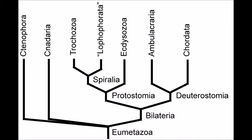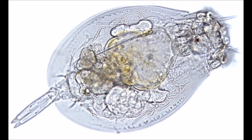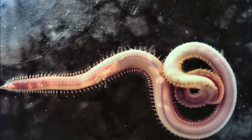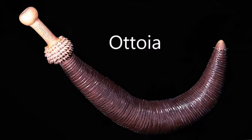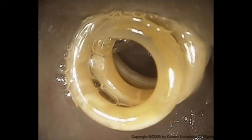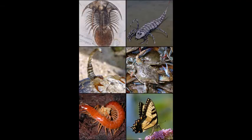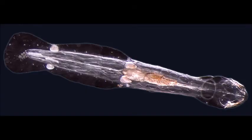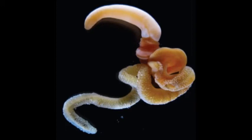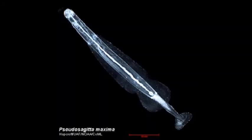Protostomia encompasses a huge group of bilaterally symmetrical animals and is mostly comprised of two clades called Lophotrochozoa and Ecdysozoa. The former is comprised of rotifers, flatworms, segmented worms, molluscs, etc. And the latter is comprised of penis worms, round worms, tardigrades, velvet worms, and arthropods. Basal to both groups is a clade commonly called arrowworms, or, technically, Chaetognatha, which are intriguing because they partly develop like a deuterostome. Thus, we see there are deuterostomes that develop like protostomes, such as hemichordates, and protostomes that develop like deuterostomes, such as arrowworms.